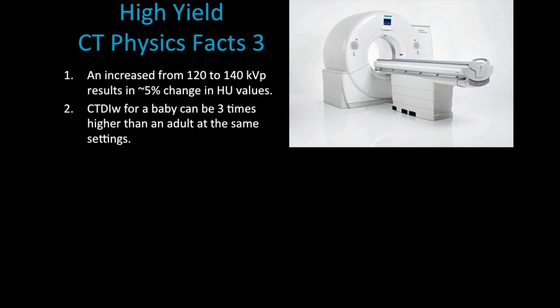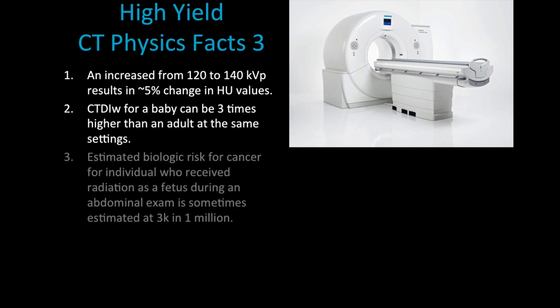The estimated biological risk of cancer for an individual who receives radiation to the fetus will be around three in one million. That's based on some estimates and different coefficients, and depending on what source you use, you'll find different estimates and different models for risk estimation.